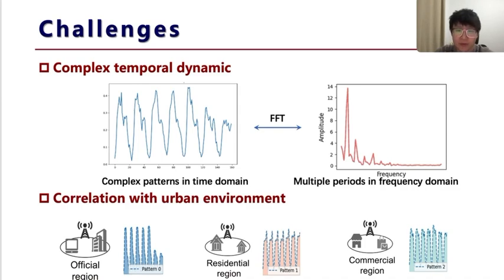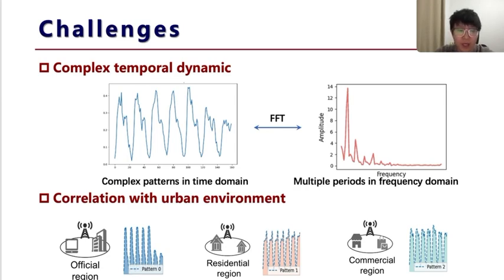First, temporal features of network traffic data are very complex. As shown in the figure, network traffic is composed of multi-scale period signals. We need to accurately extract period information for better generation. Second, network traffic is highly coupled with the urban context. As shown in the figures, network traffic in different areas shows different patterns. We also need to capture the relationship between the context and network traffic.